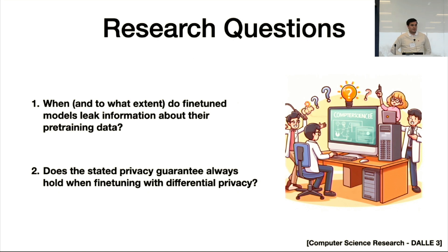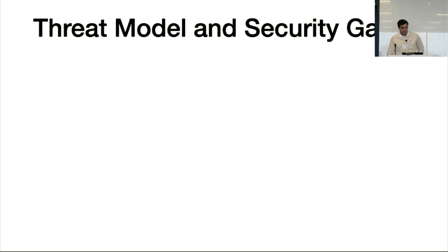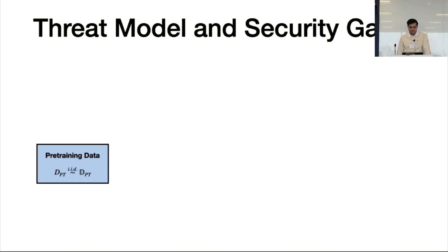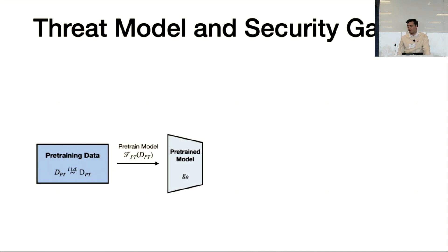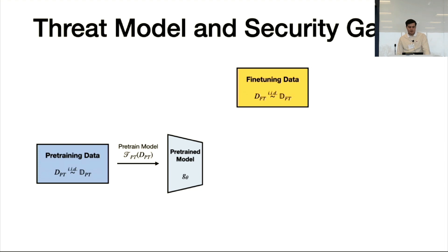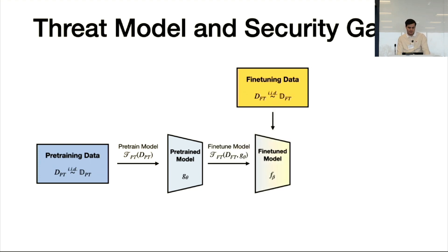One prominent example was MIT's 80 million tiny images dataset, which was hosted for 10 years on the internet before sensitive information was discovered in it. Furthermore, companies have proprietary web-scraped datasets like Google's JFT-300, used to pre-train models that can be fine-tuned as a service by enterprise customers. Our two main research questions are: when do fine-tuned models leak pre-training data, and when fine-tuning with DP, do we get the guarantee we expect?